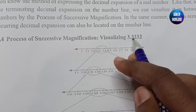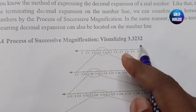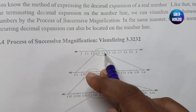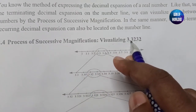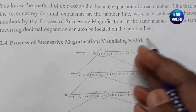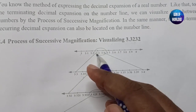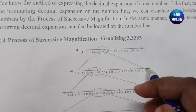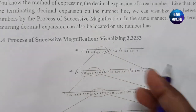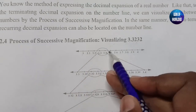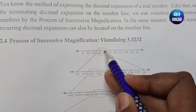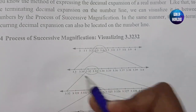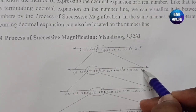The number 3.32 lies between 3.3 and 3.4. So we take these two numbers — 3.3 and 3.4 — and we have to extend or enlarge this section. If we enlarge it, we can see there are many more numbers between these two.